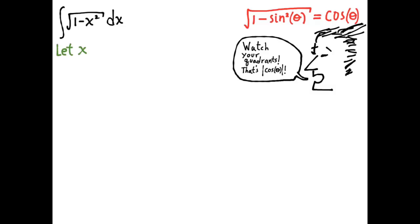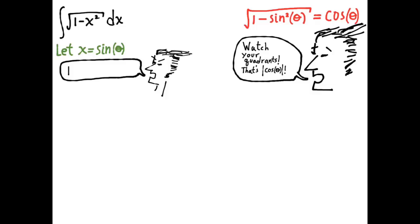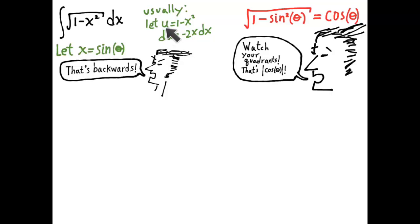The substitution we want to make is: let x equal sine of theta. This is backwards from the usual way we make variable substitutions. Usually we let u equal something like 1 minus x squared and figure out what du is. Here we're defining theta implicitly by saying x equals sine of theta. That's how trigonometric substitution works — it's backwards from ordinary substitution. But backwards substitution is easier, because all we have to do is differentiate this equation and we find dx.